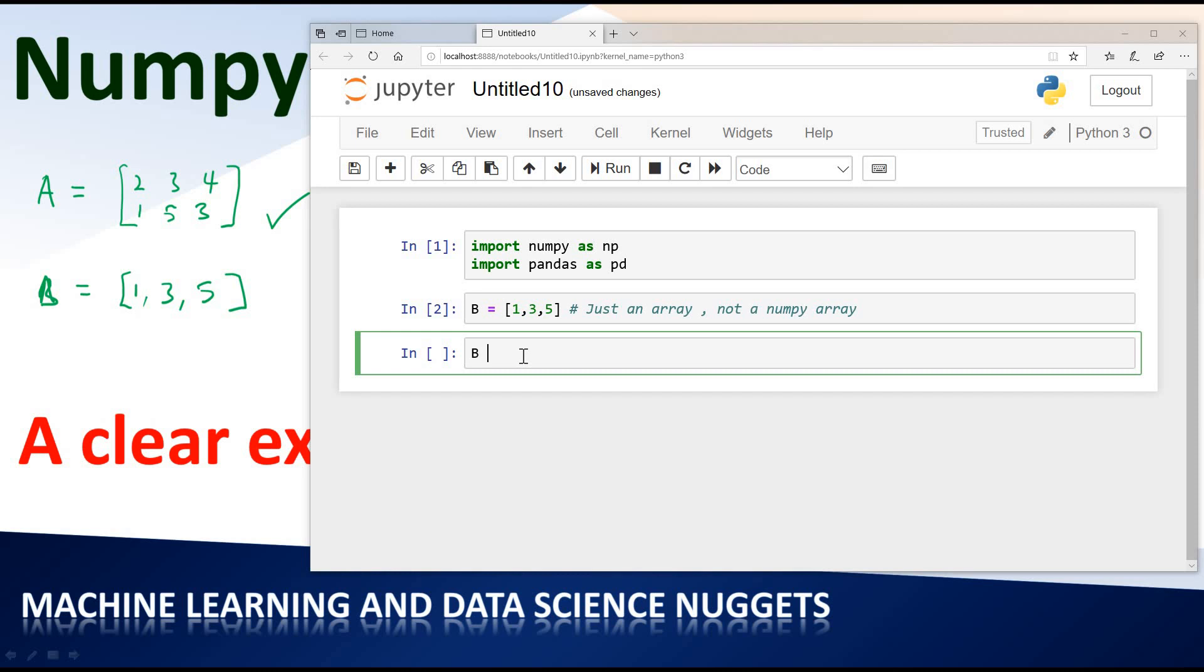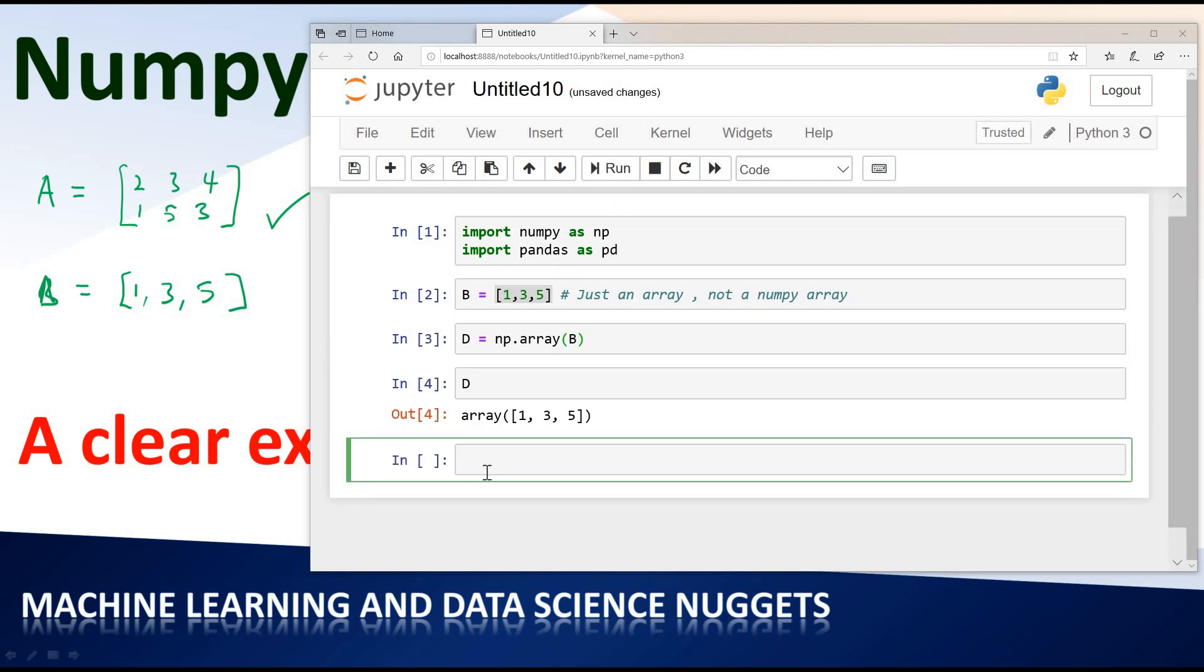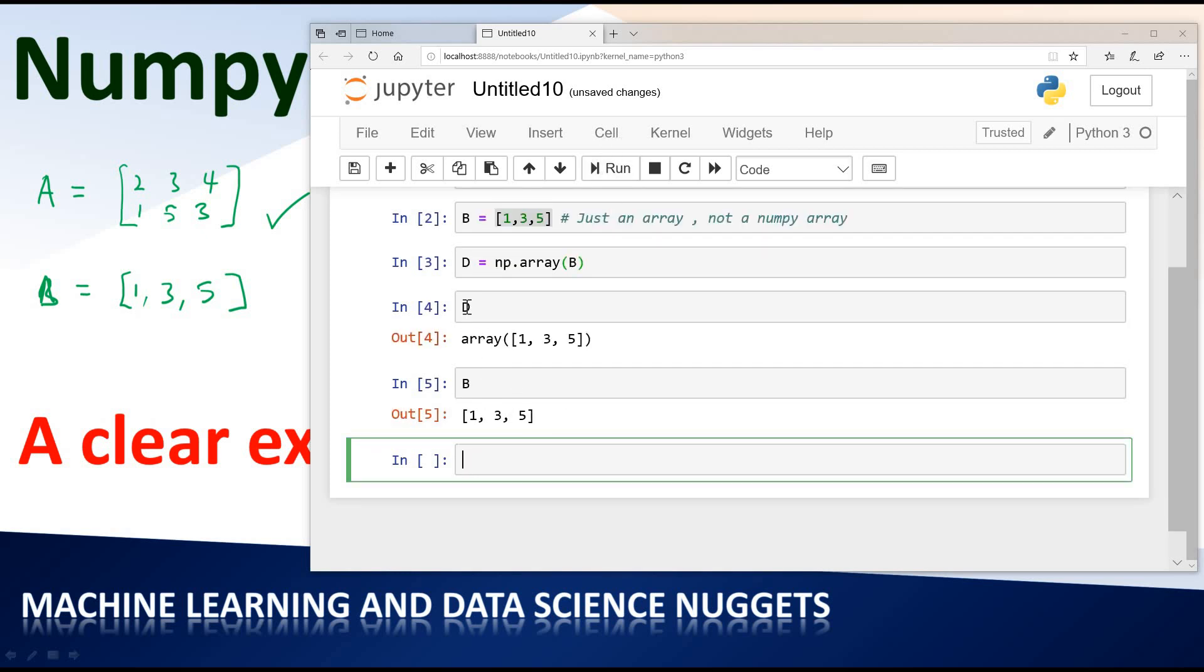So you're going to say d equals np.array and you specify the array you want. We're creating an array d which is a NumPy array and you give it an ordinary array b. If you check the content of d you can see that it says array, but if you check the content of b you can see it's a different thing. So d is a NumPy array and b is an ordinary array.